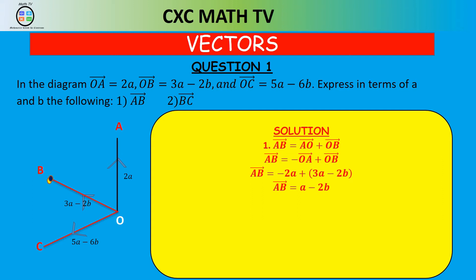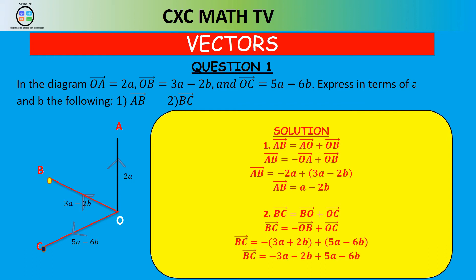For vector BC, going from B to C we go from B to O then O to C. Using inverse vectors, BO equals minus OB. So BC equals minus OB plus OC, which is minus(3A minus 2B) plus (5A minus 6B). This simplifies to minus 3A plus 2B plus 5A minus 6B, giving vector BC equals 2A minus 8B.